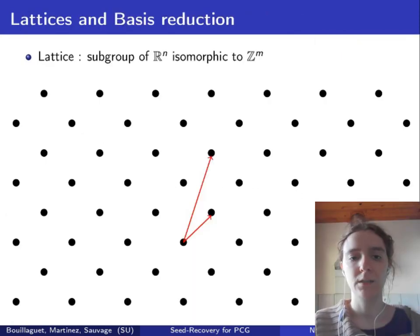A lattice is a discrete subgroup of R^n. Here we have an example of a lattice in dimension 2. The two red vectors are a basis of this lattice.